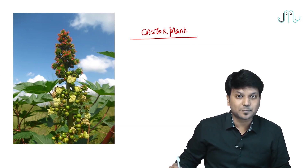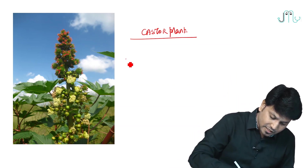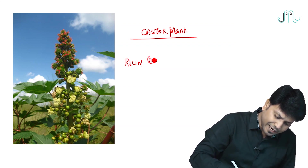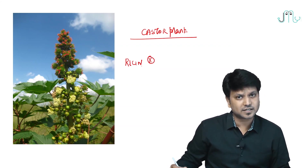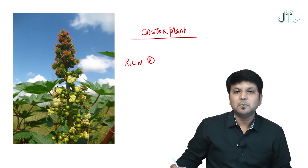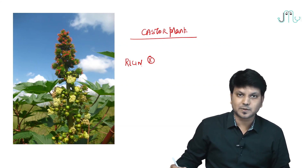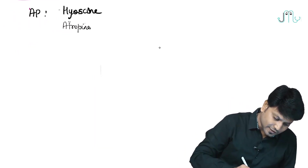This is the castor plant, and what is the active principle? The active principle is ricin. We have many active principles for Ricinus communis, but the primary active principle is ricin.